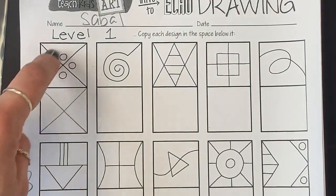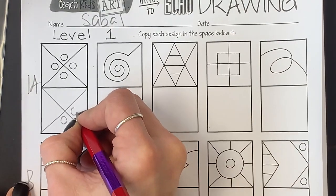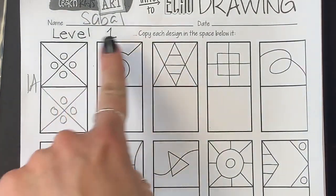Then, I need to draw 1, 2, 3, 4 circles. Taking my time, trying to put them in the same place. And that one is complete. I'll move on to the next one.